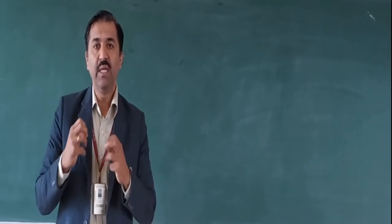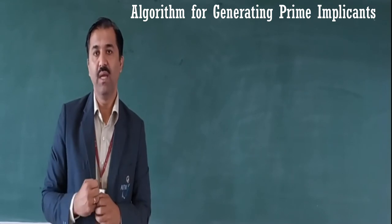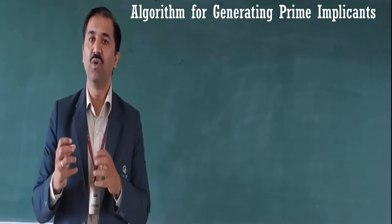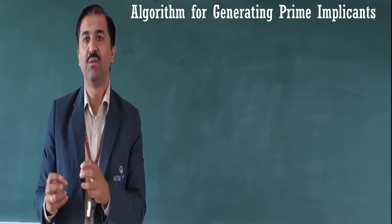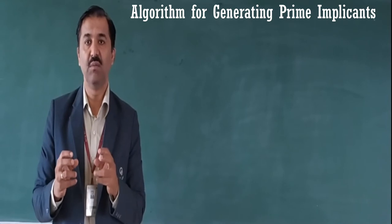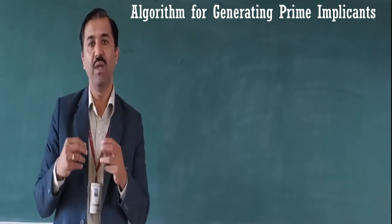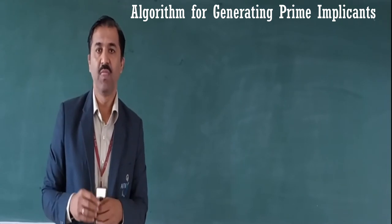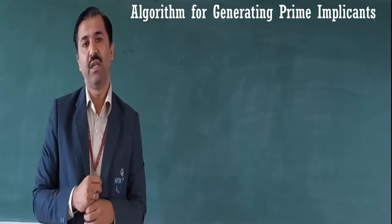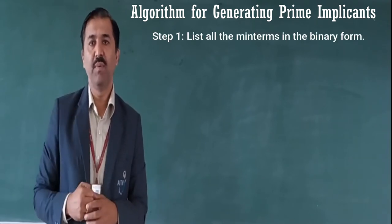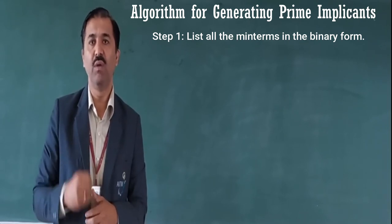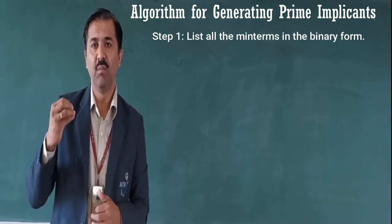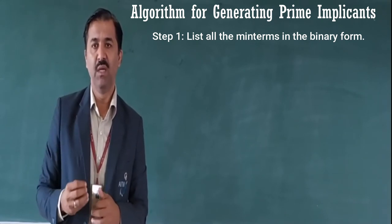Let us understand the algorithm for generating the prime implicants. What are prime implicants? What are essential prime implicants? You have already understood these in my previous video. If you have not watched my previous video, kindly go through these concepts, as they are going to be very helpful for understanding the Quine-McCluskey method. The first step in generating prime implicants using the Quine-McCluskey method is that we are going to list all the minterms in binary form — whatever minterms are given in the Boolean function, we represent them in binary.